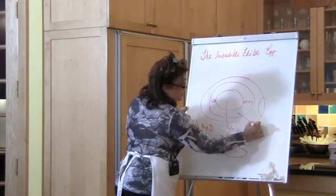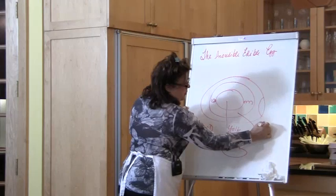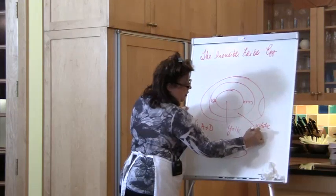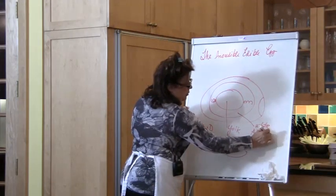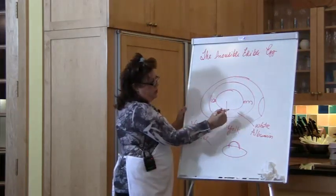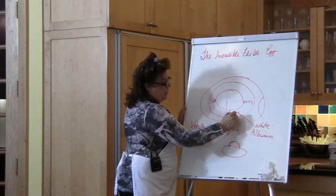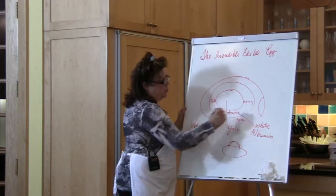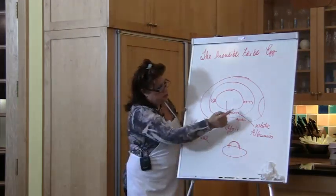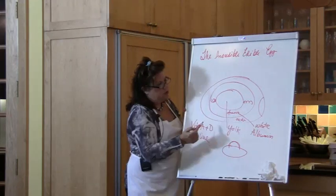And then this is the white, the albumin it's called. Okay, so you want to see a differentiation between the inner part of the yolk and the outer. So the inner albumin and the outer albumin. So the inner should be thicker, the outer should be thinner.